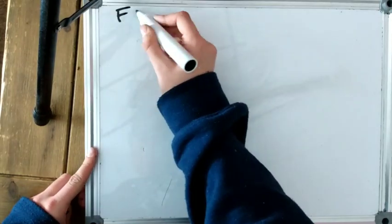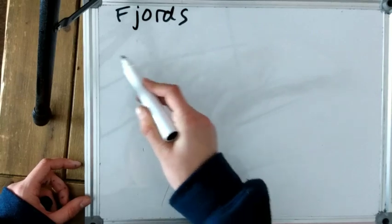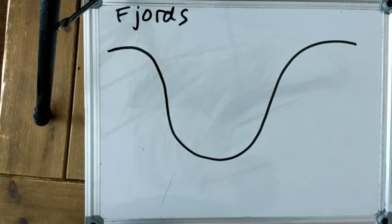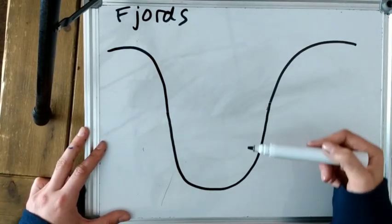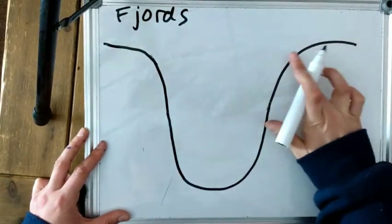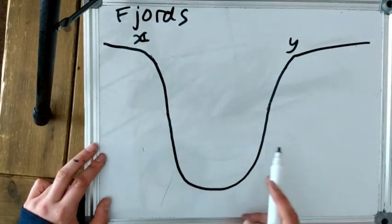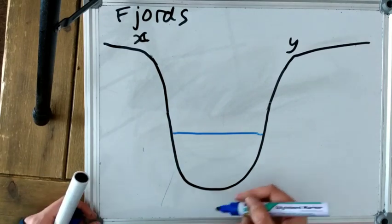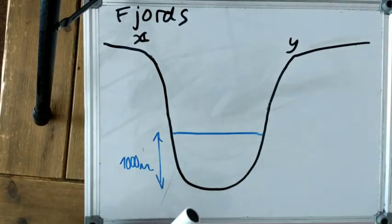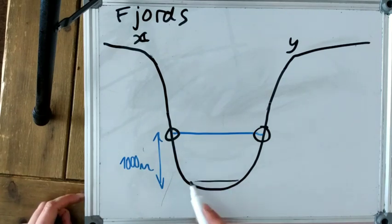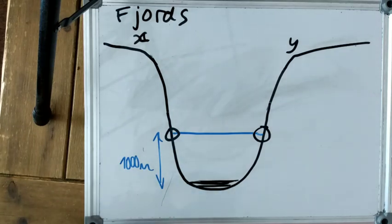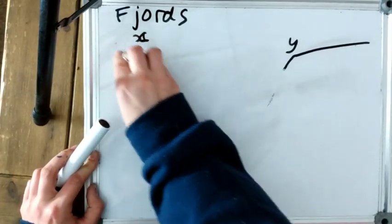Our next submergent landform is a fjord. Looking at the cross section, fjords are glacial U-shaped valleys with very steep cliff-like sides, as you can see here. As the sea level rises and they get filled in, they are very deep — about a thousand metres on average — just because of the nature of a glacial valley. You get marine erosion and undercutting, and you get alluvial deposits at the bottom because as sea level rises you get deposition.